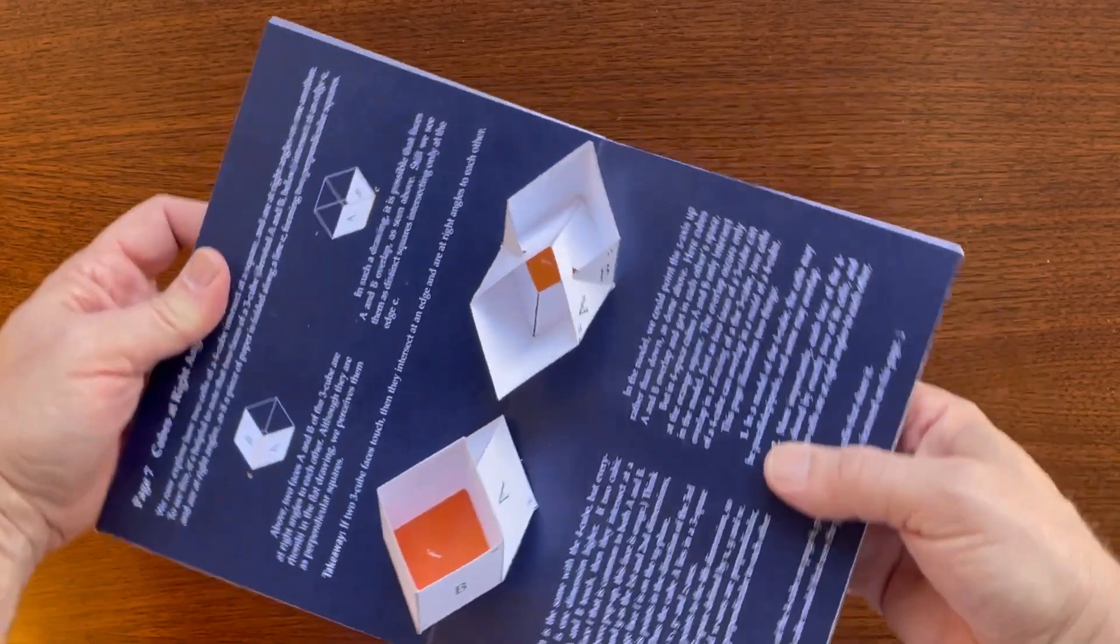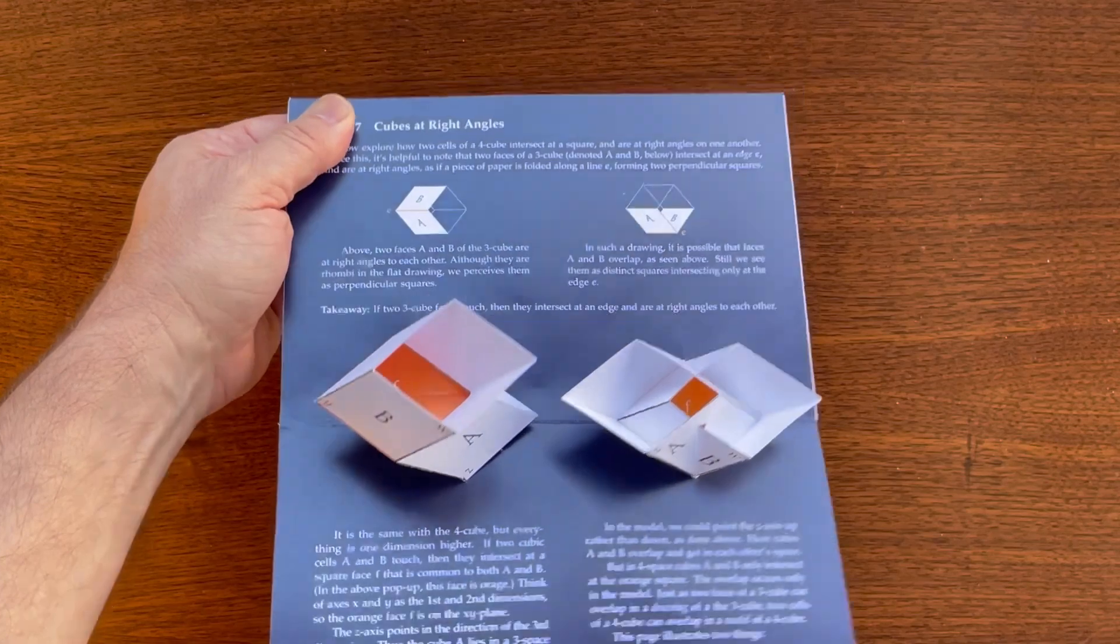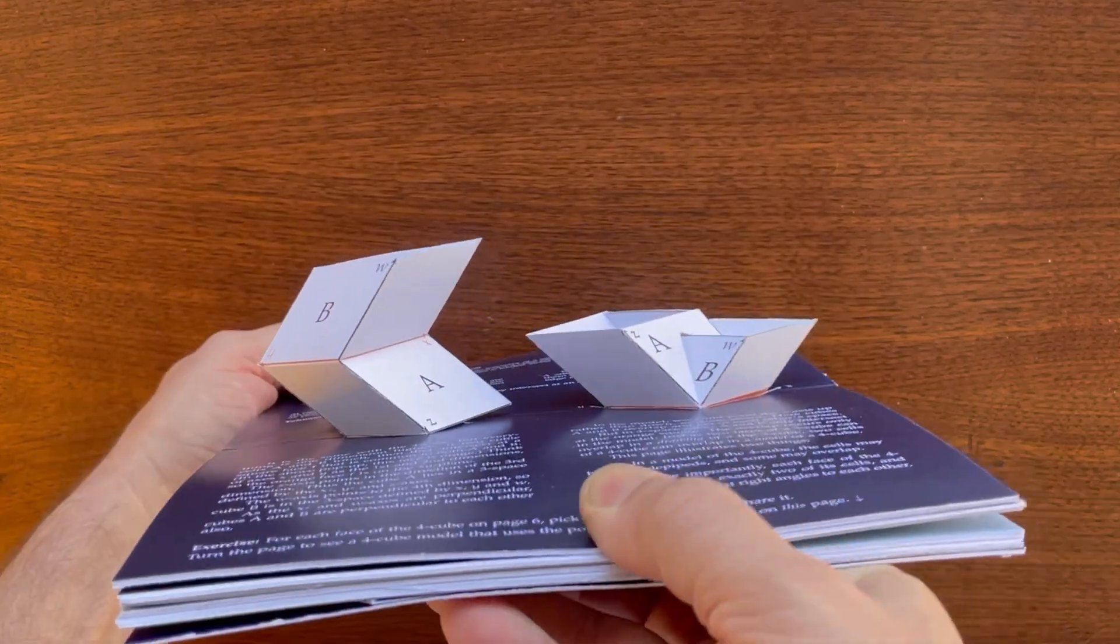This page explains how two cubes can share a face and be at right angles to one another.